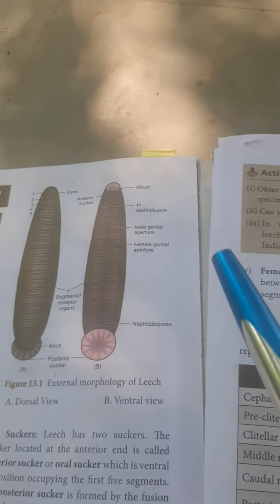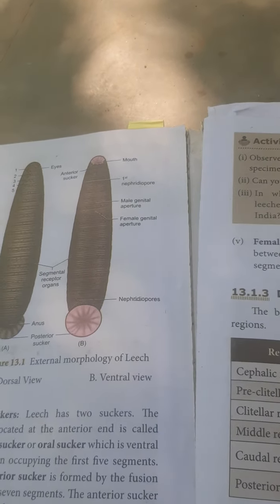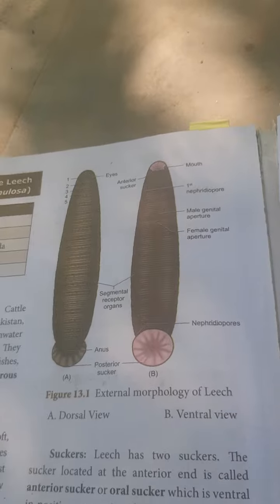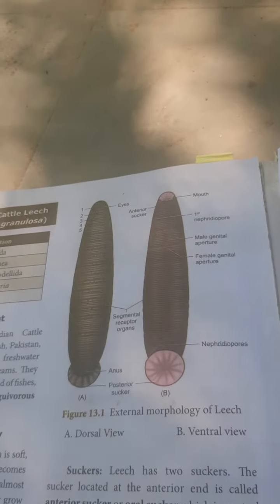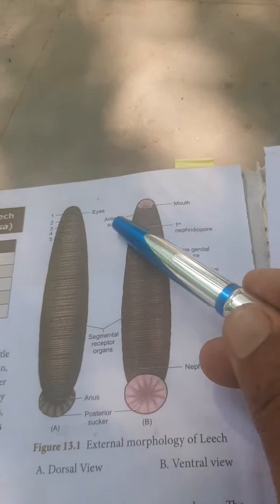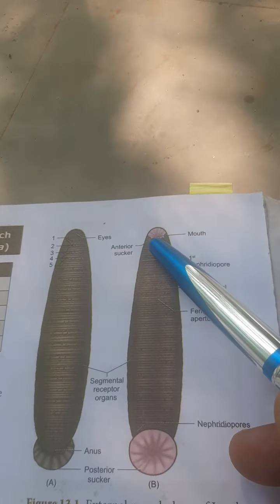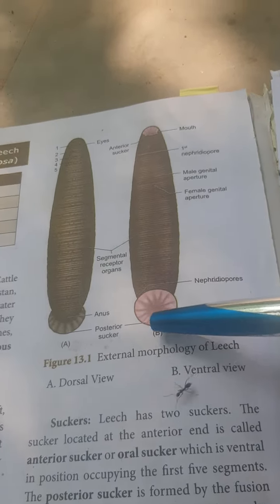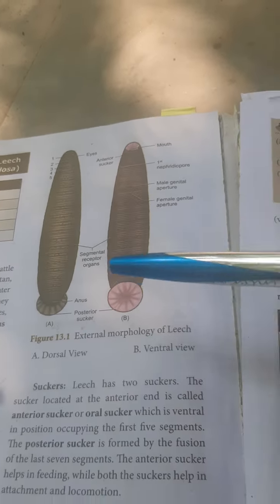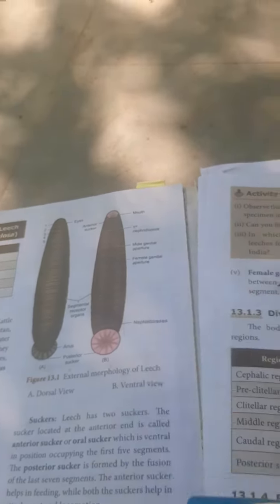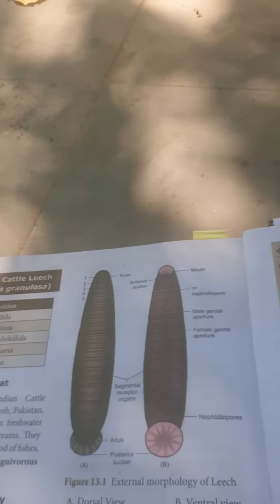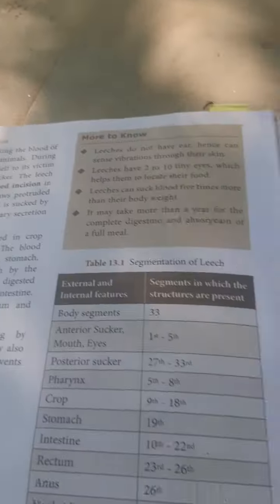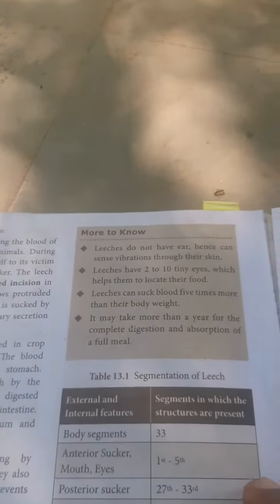Next, the suckers. There is an anterior sucker and a posterior sucker. The anterior sucker is here and posterior sucker is here. The sucker is used to suck blood. It has great value in medicinal use - medicinal leeching.